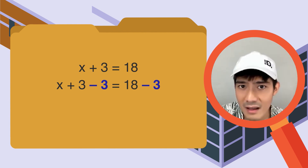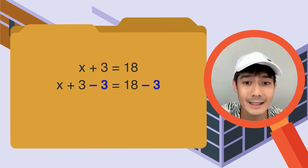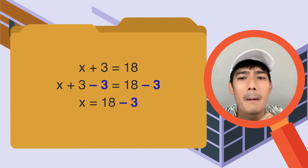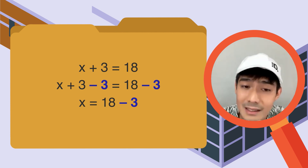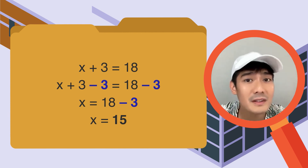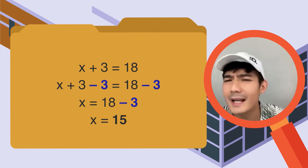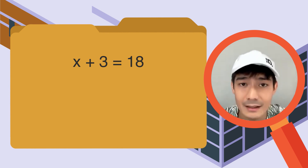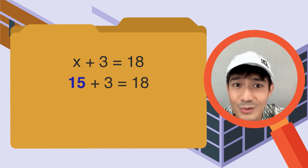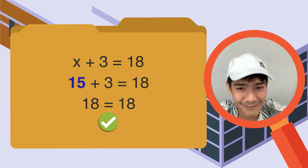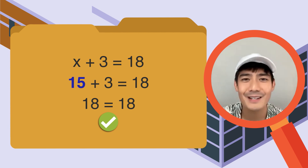Natandaan nyo? A, B, A minus C, B minus C. Kung ano yung sinubtract natin sa left side ng equation, ganun din yung gagawin natin doon sa kabila. Let's simplify: 3 minus 3 is 0, 18 minus 3 is 15. That means ang value ng ating x is equal to 15. Check: i-substitute na natin yung value ng x — 15 plus 3 is equal to 18. 18 is equal to 18. Tama nga — pareho yung value ng both sides ng equation.